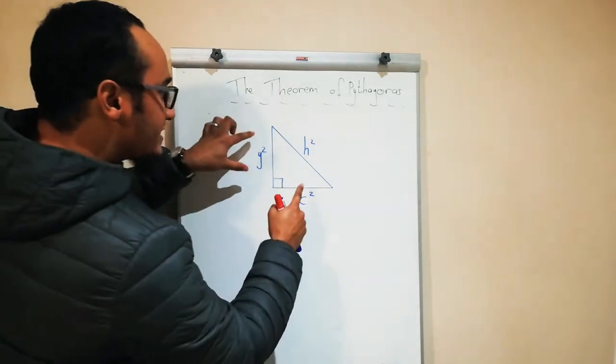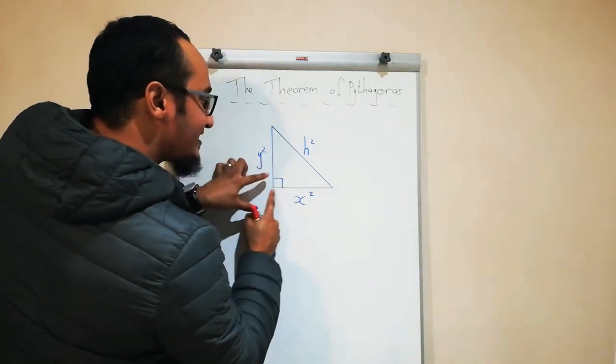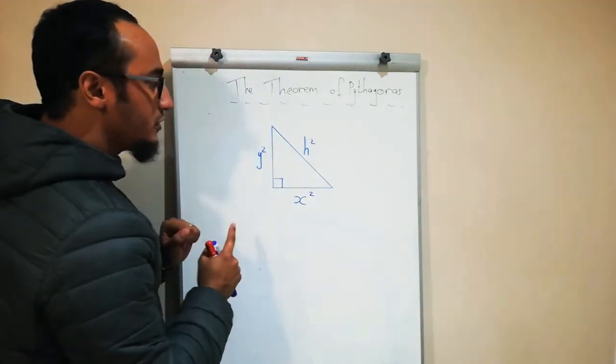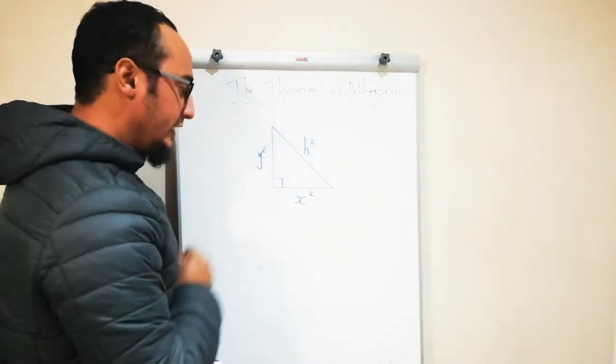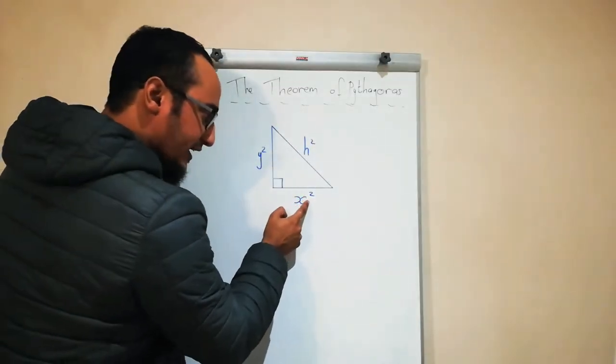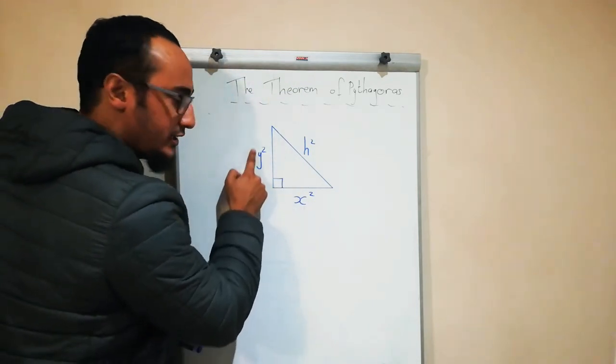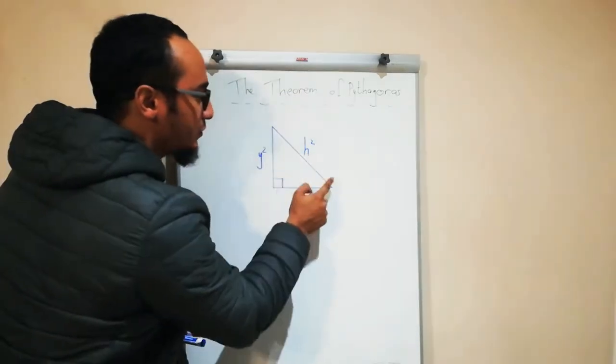So the theorem of Pythagoras states that the sum of the two shorter sides would be equal to the longest side. What does sum mean? Added. In other words, x squared plus y squared equals h squared.